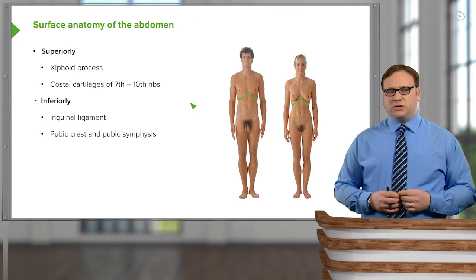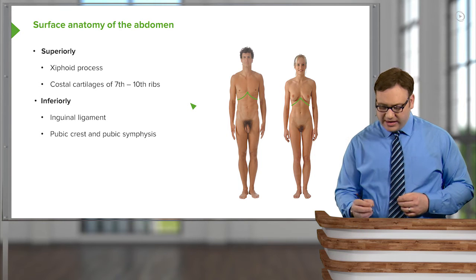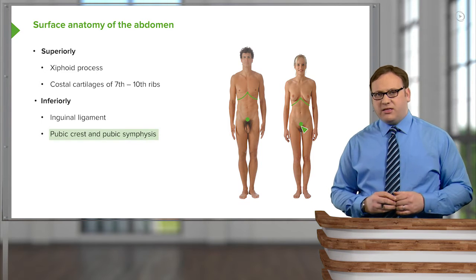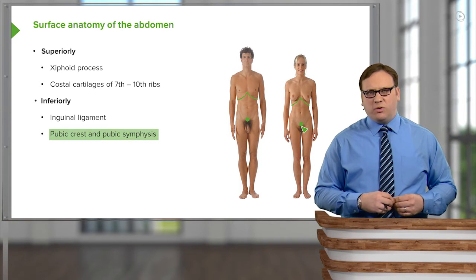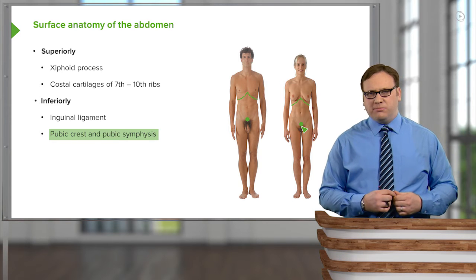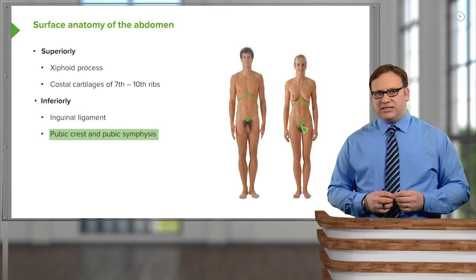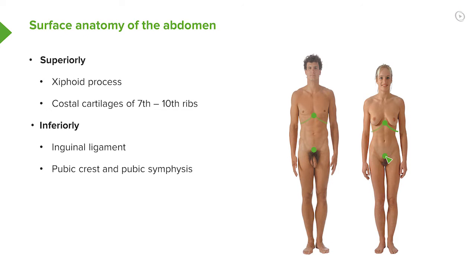Inferiorly, we have a few landmarks which we can observe. In the midline, in the male and the female, we have the pubic crest and the pubic symphysis — we'll see these later when we look at the bones of the pelvis. Radiating away from the pubic crest and pubic symphysis, we find the inguinal ligaments, one on either side, and these form the inferior boundary of the abdomen. So here we can see the superior and inferior boundaries of the abdomen in both the male and female.